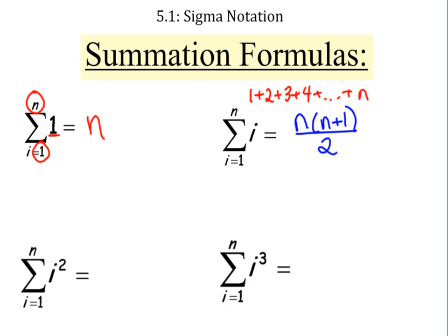If you're adding up i squared, so that's like 1 squared plus 2 squared plus 3 squared, plus all the way up to n squared, that answer is going to be n times n plus 1 times 2n plus 1 over 6.